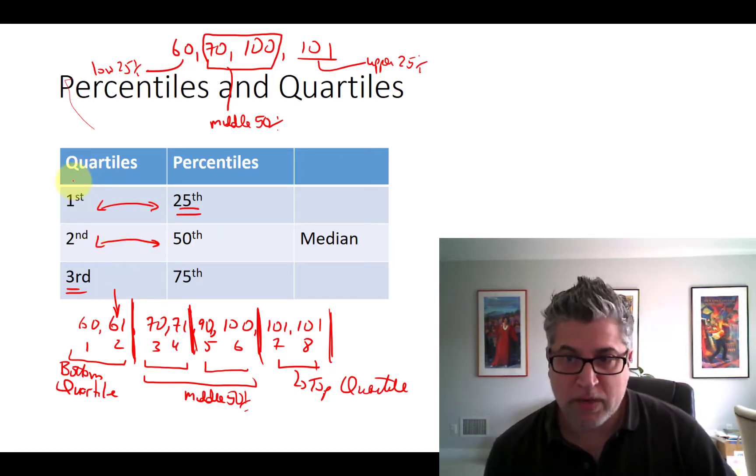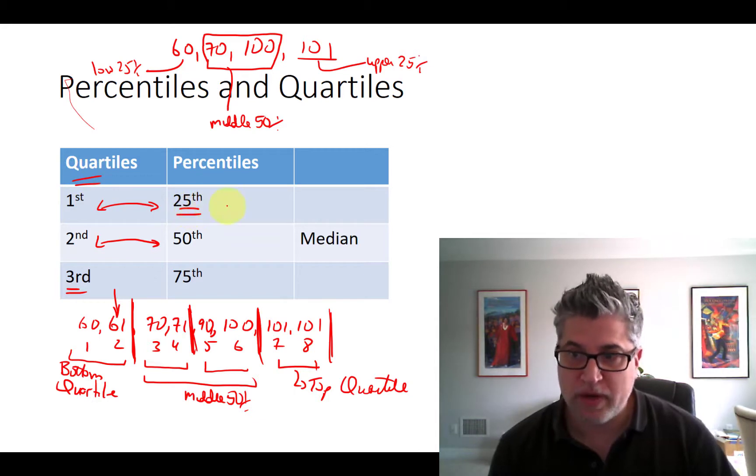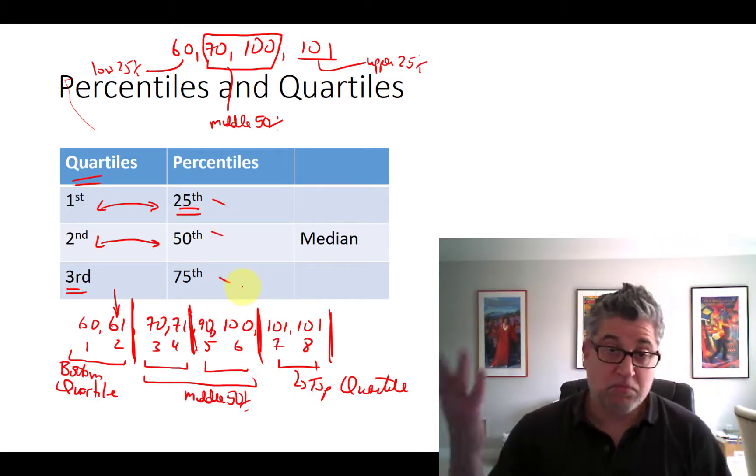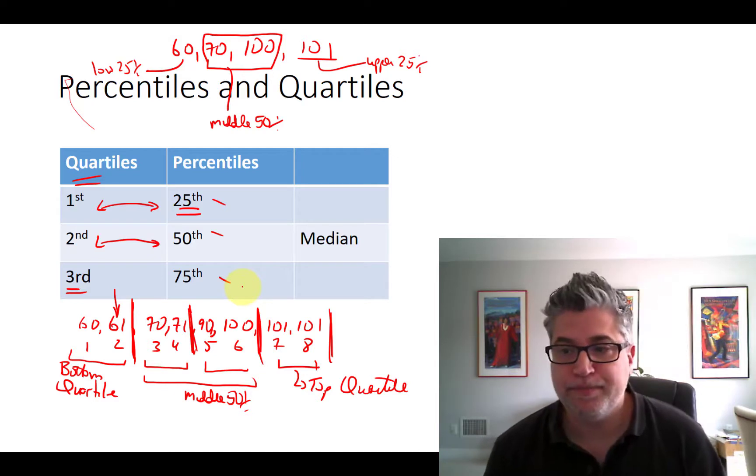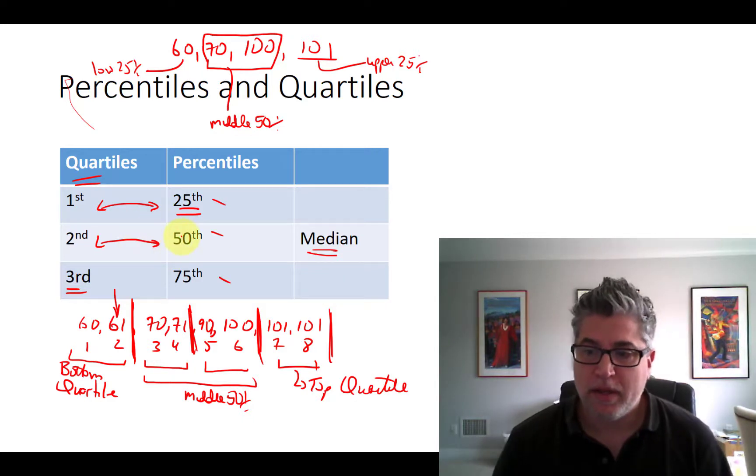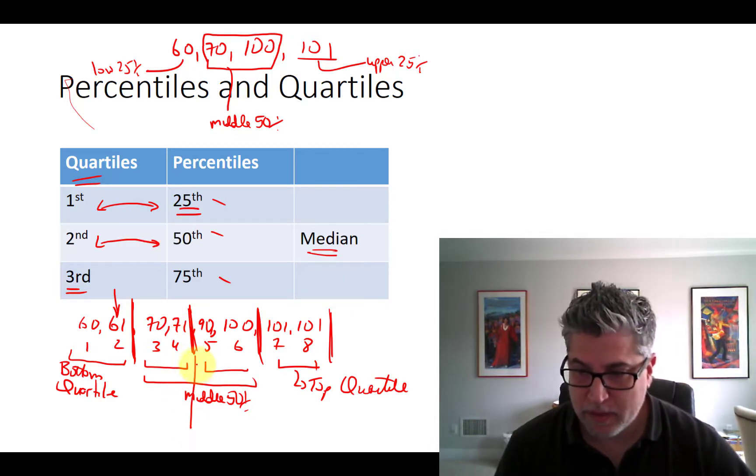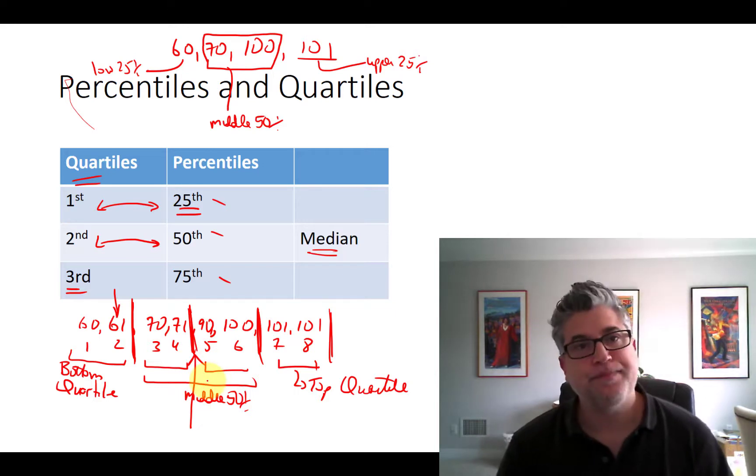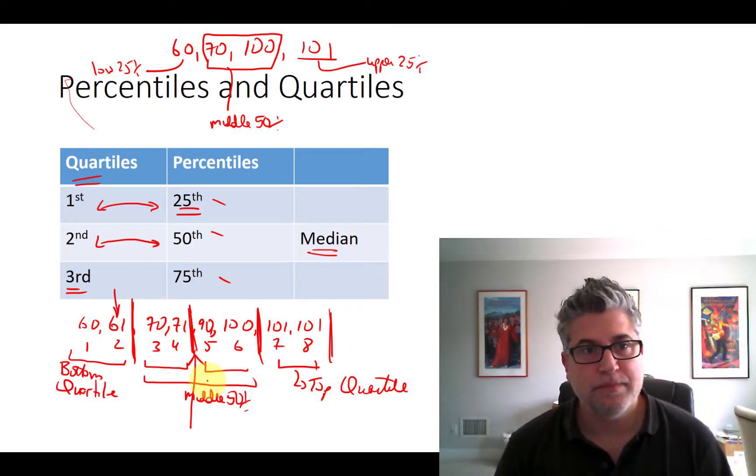When we're talking about quartiles, we're looking at 25, 50, 75, and 100 percentile. By the way, the median is the middle value, right? And so that is going to be your dead center 50th percentile.